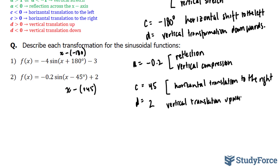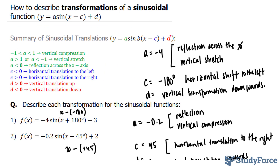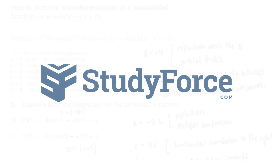I've been using the words translation and transformation interchangeably — they mean the same thing in this case, so don't get confused if I use one word over the other. And there you have it: two examples on how to describe transformations of a sinusoidal function. Thank you.